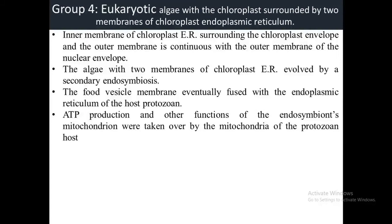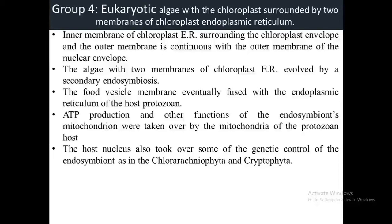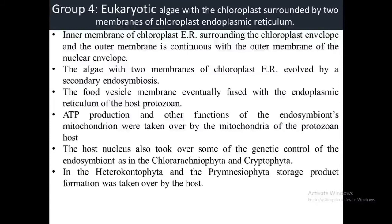Through evolution, ATP production and other functions of the endosymbiont mitochondrion were taken over by the mitochondria of the protozoan, and the mitochondria of the endosymbiont were eventually lost. The host nucleus also took over some of the genetic control of the endosymbiont, with a reduction in the size and function of the nucleus of the endosymbiont, as in Chlorarachniophyta and Cryptophyta. The type of chloroplast endoplasmic reticulum in Heterokontophyta and Prymnesiophyta resulted from further reduction — the nucleomorph was completely lost and storage product formation was taken over by the host.